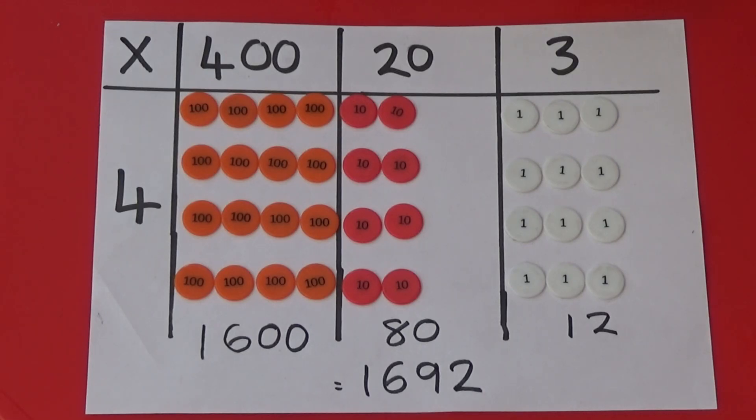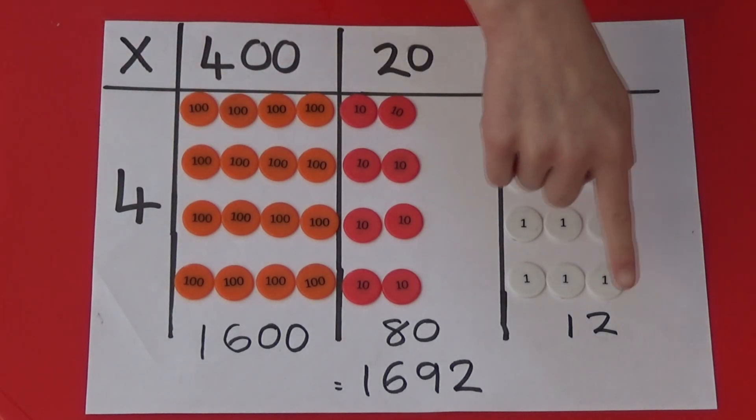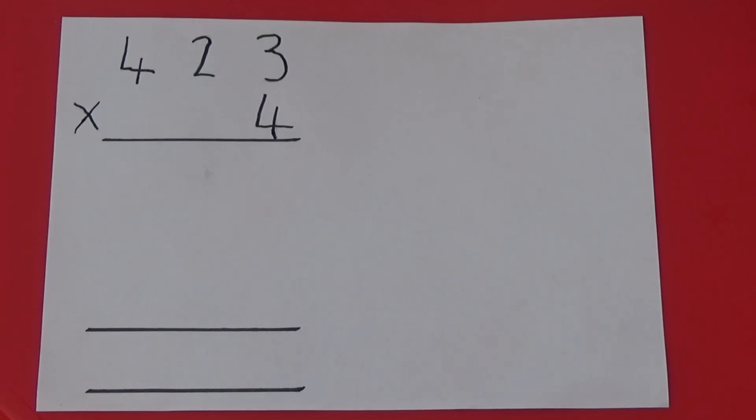If we look at the grid, 3 multiplied by 4 equals 12. If we look at the column method, 3 multiplied by 4 is 12. So I'm going to write 12 in the tens and ones.